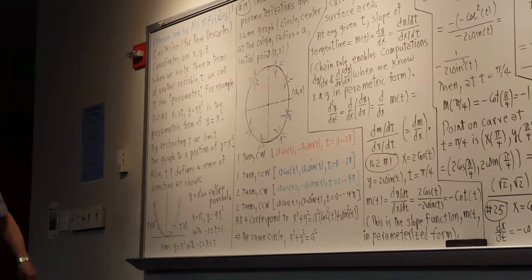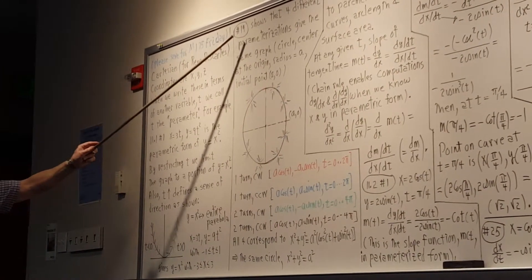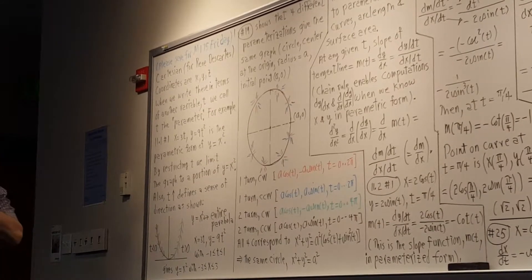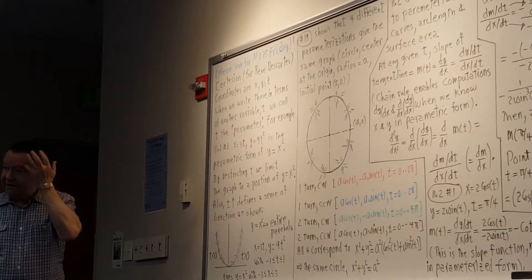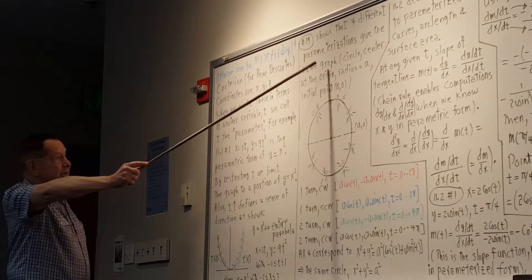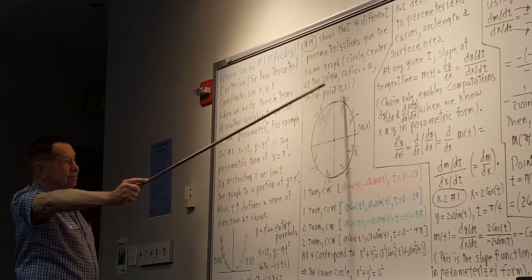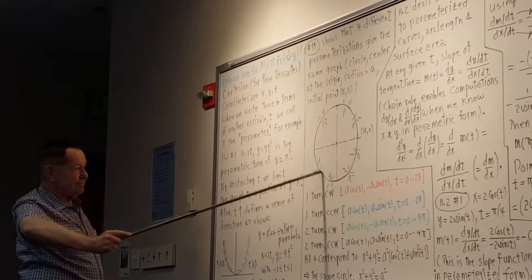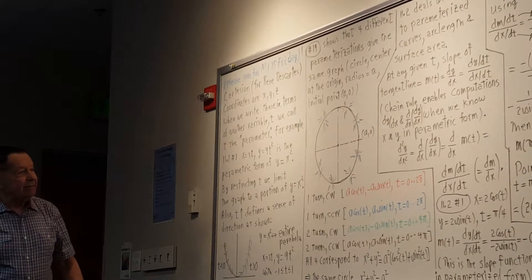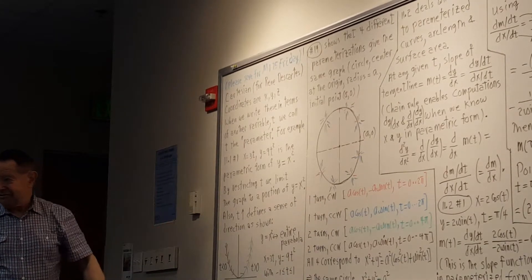Another important concept with parametric representations is that you can have several different ways to represent something parametrically and the graph will be identical. For example, in problem 19, they want you to show four different parameterizations that give the same graph — which is a circle with center at the origin and radius A. CW is clockwise and CCW is counterclockwise.